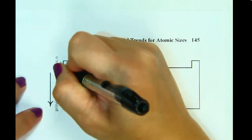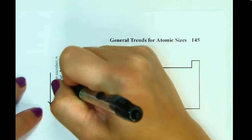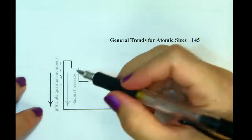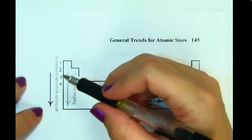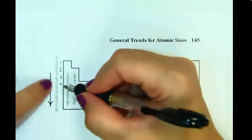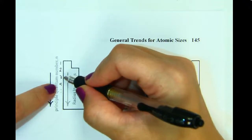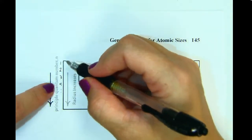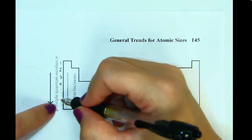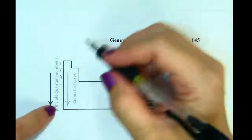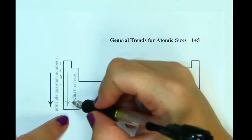As you go down the periodic table, there are one, two, three, four shells, etc. The more energy levels you have, the more screening there is, because energy level 4 is screened by energy levels 3, 2, and 1, and energy level 7 is screened by energy levels 6, 5, 4, 3, 2, and 1. This is also the trend where the radius increases — the more energy levels you have, the larger the radius becomes.